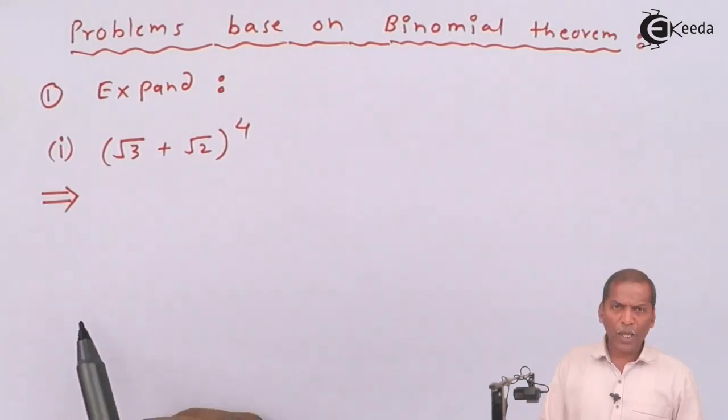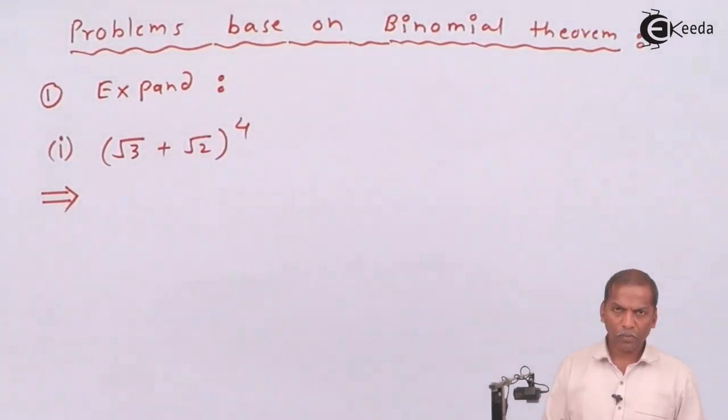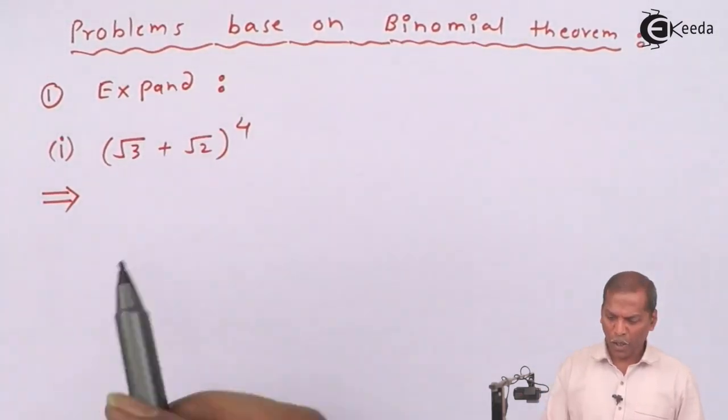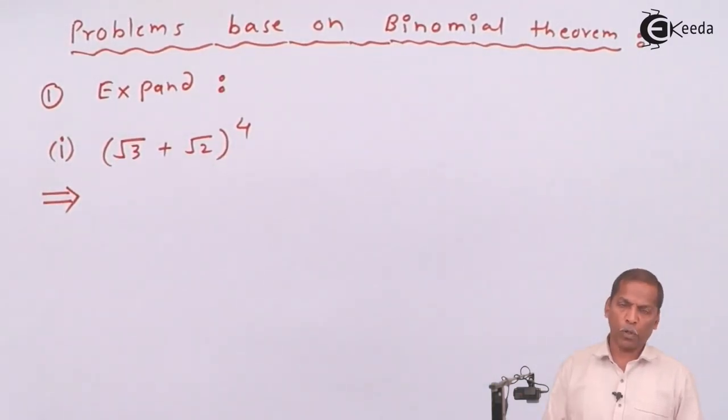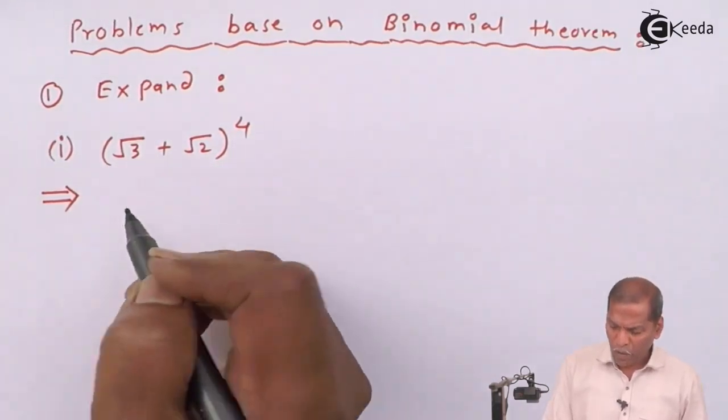Problem one is expand. Sub question one is root 3 plus root 2 whole bracket raised to 4. Now let's see the solution.